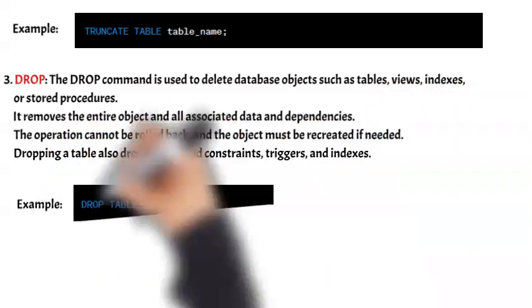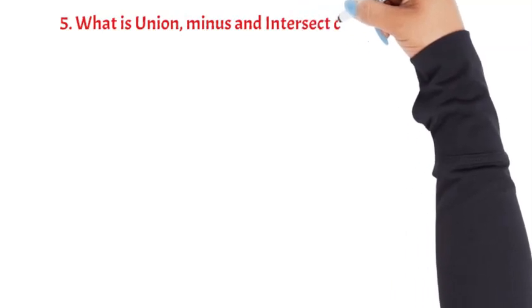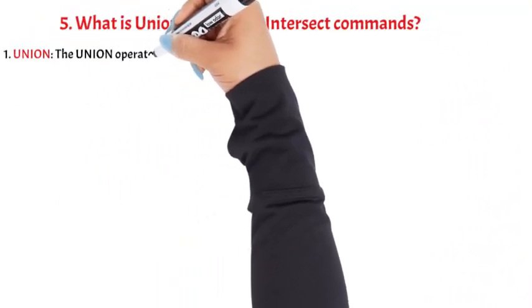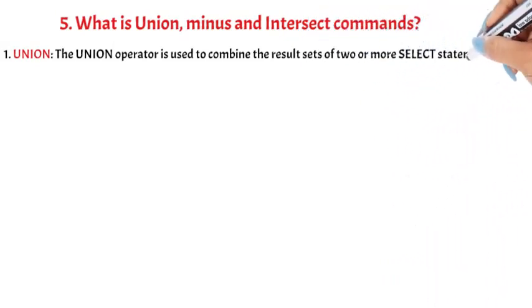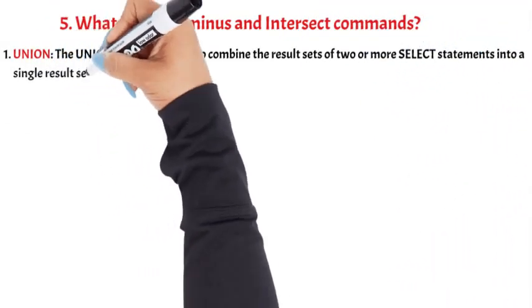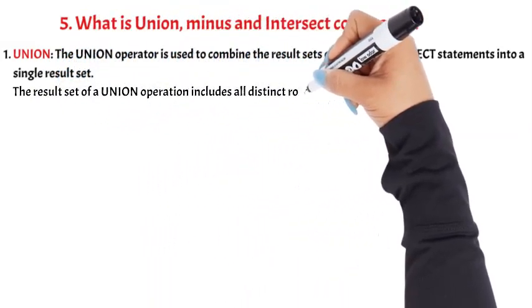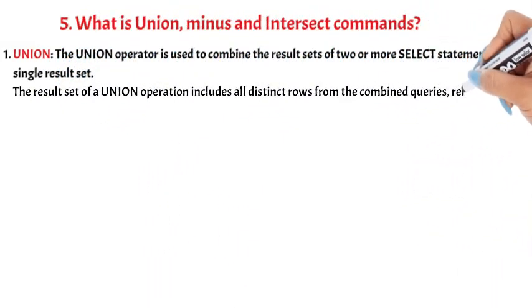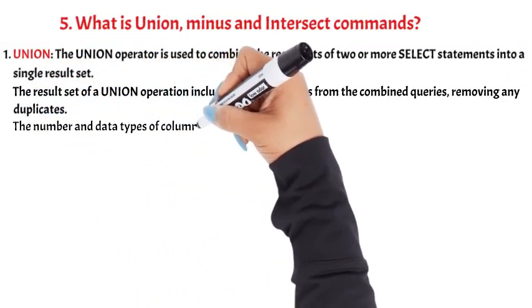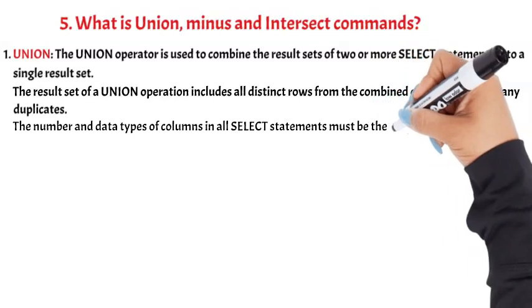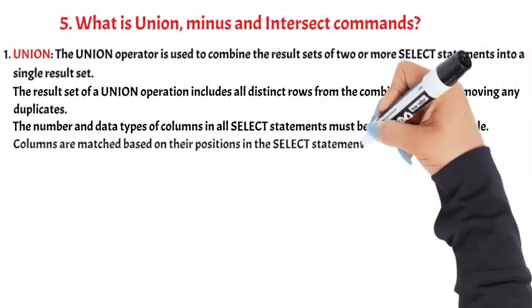Question 5: What are the Union, Minus, and Intersect commands? The Union operator is used to combine the result sets of two or more select statements into a single result set. The result set of a Union operation includes all distinct rows from the combined queries, removing any duplicates. The number and data types of columns in all select statements must be the same or compatible, and columns are matched based on their positions in the select statements.